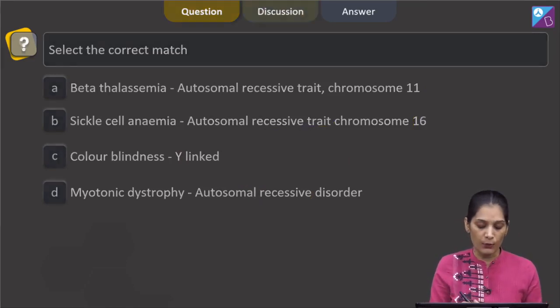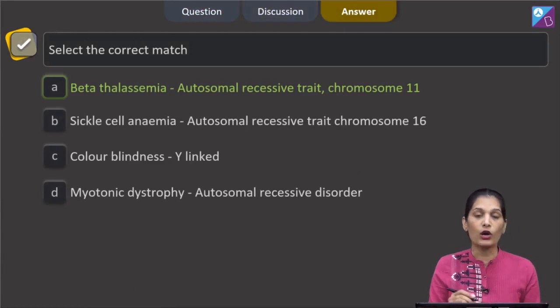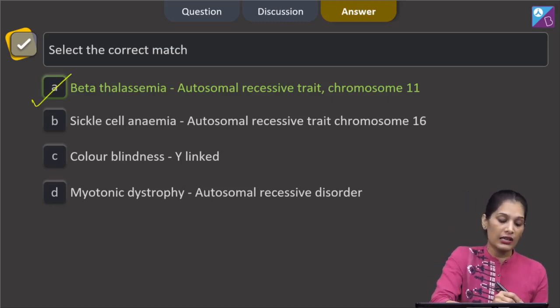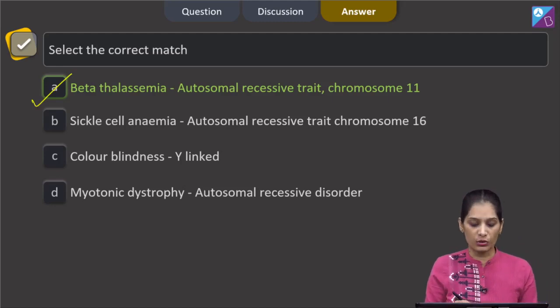So the correctly matched option over here is option A which says beta thalassemia is autosomal recessive trait and the gene is located on chromosome number 11. Let's move to the next question.